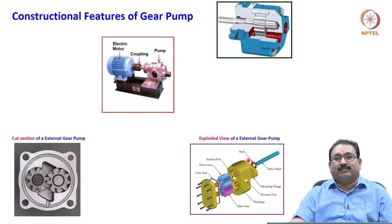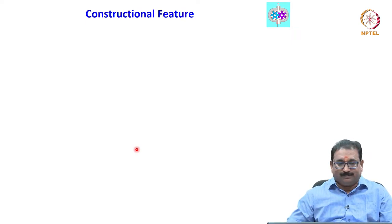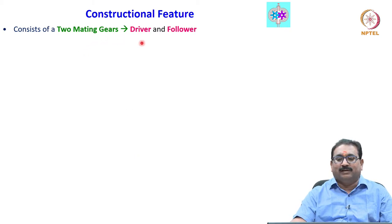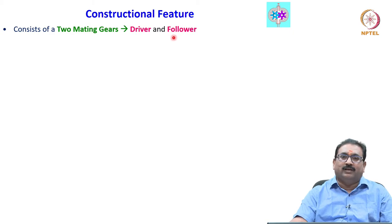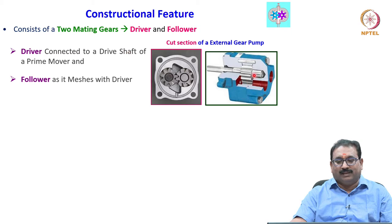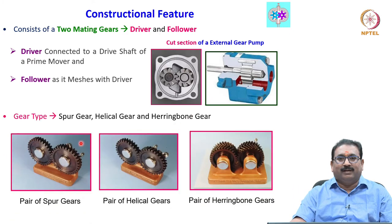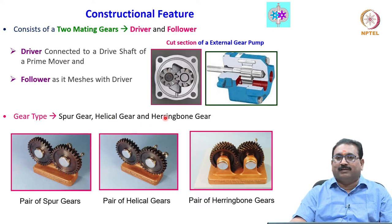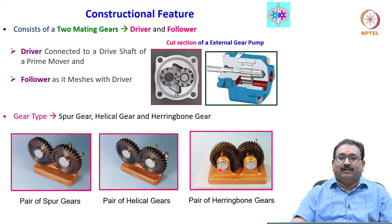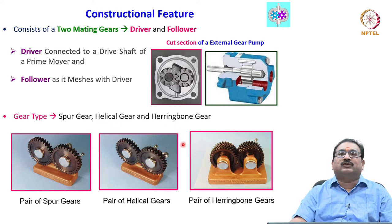Let us see the constructional features in detail. It consists of two mating gears — driver and follower. The driver is connected to the electric motor shaft through the coupling. The follower meshes with the driver. Different gear profiles are used in the pumps: spur gear, helical gear, herringbone gear. Based on the gear profile, different types of external gear pumps are available, each having its own advantages and disadvantages. A pair of gears is housed in the housing — the gear profile may be spur, helical, or herringbone type.